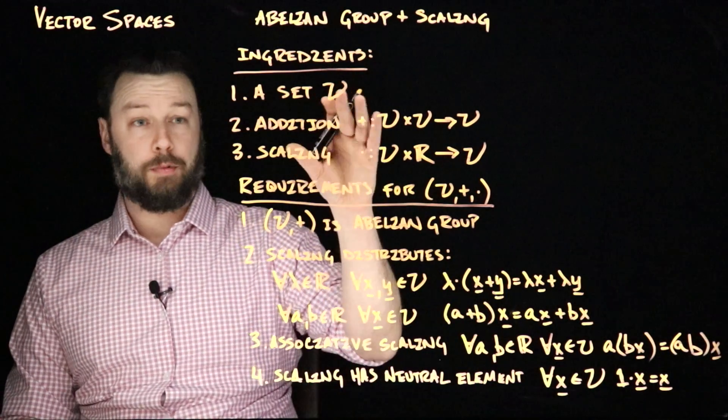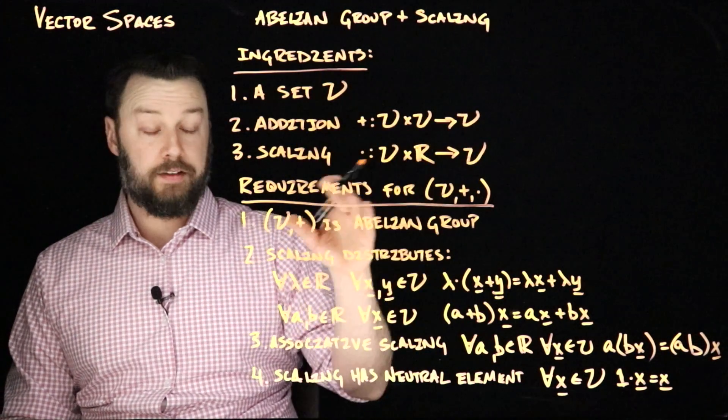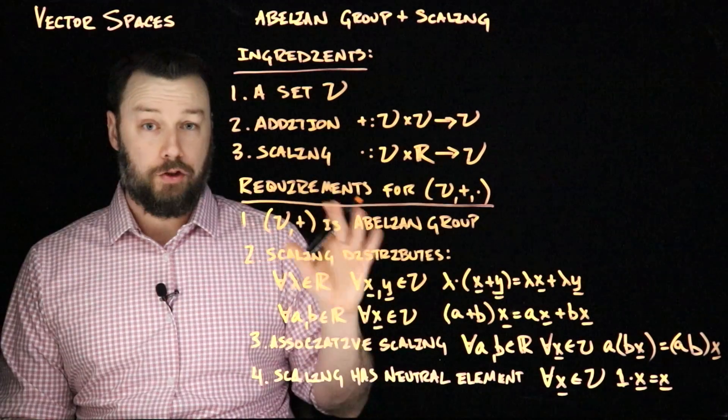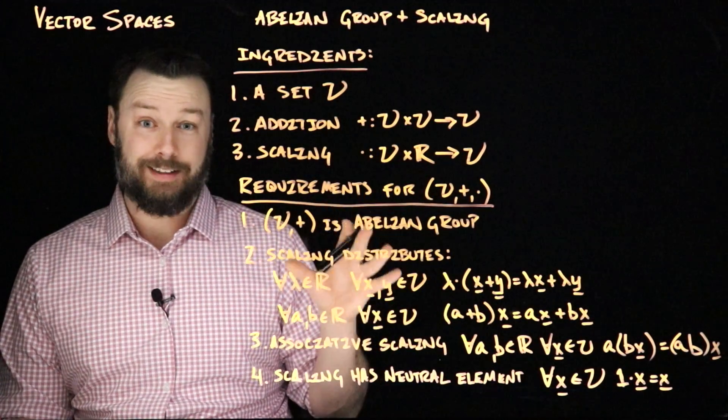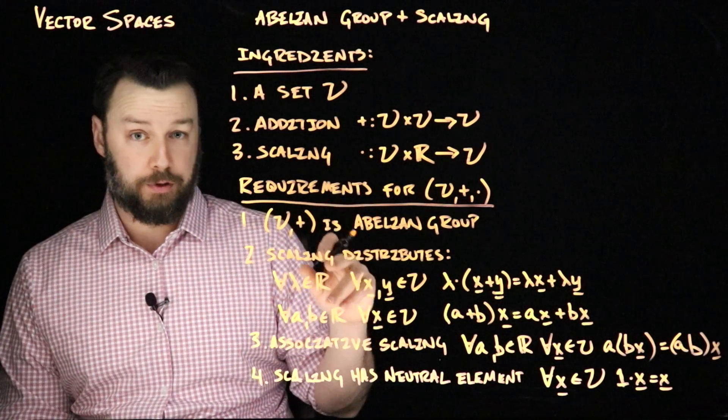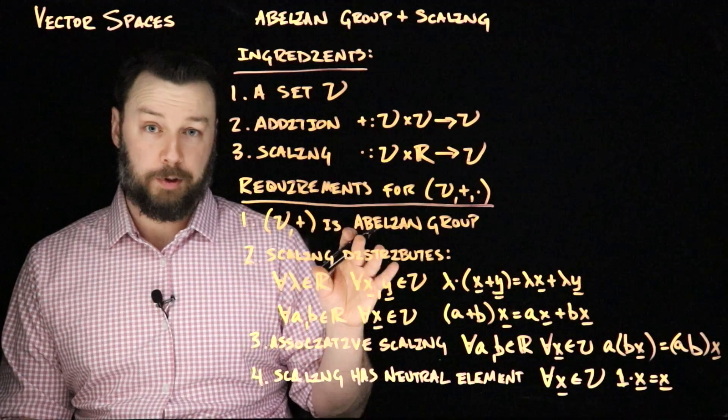When we have this setup, the members of V are called vectors. In this abelian group, the neutral element is, of course, the all zeros vector. Note that in this setup, we have not defined vector multiplication. That is, we do not have a product between two vectors here. When we talk about inner products and norms, that's when we'll introduce that.